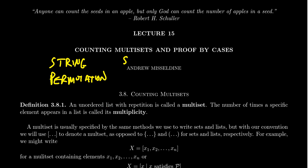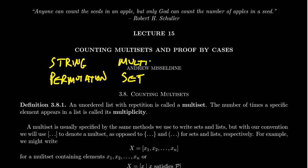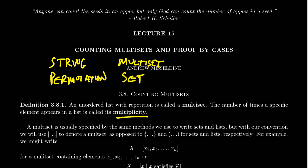There's sort of a natural gap here — are there unordered lists with repetition? Absolutely, and that's exactly what we refer to as a multi-set. The name sort of suggests what's going on: a set is an unordered list, and the 'multi' suggests that an element can show up multiple times. The number of times a specific element appears in a multi-set is referred to as the multiplicity of that element.